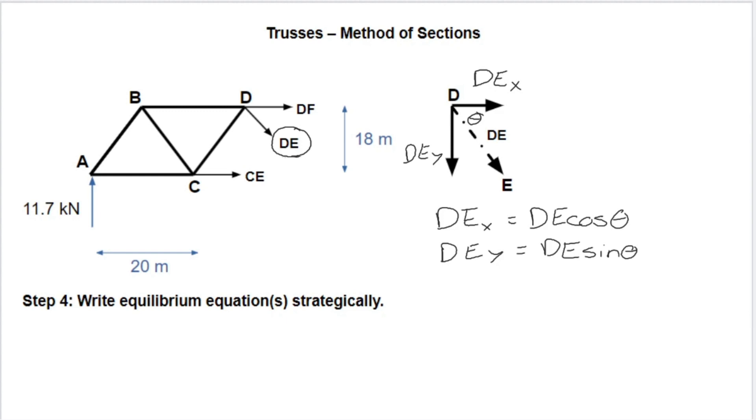So if we think of our three options, some of the forces in the X, Y, and some of the moments. If we start with some of the forces in the X, the forces that we'll be considering are CE, DF, and this X component of DE. So we'll have three unknowns in one equation. We won't be able to solve for any of them. So some of the forces in the X doesn't help us.